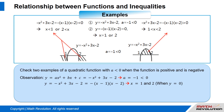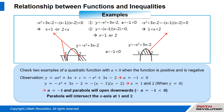y equals negative x squared plus 3x minus 2 equals negative (x minus 1)(x minus 2), which means x equals 1 and x equals 2 when y equals 0. Since a equals negative 1, which is smaller than 0, the parabola will open downwards and will intersect the x-axis at 1 and 2.